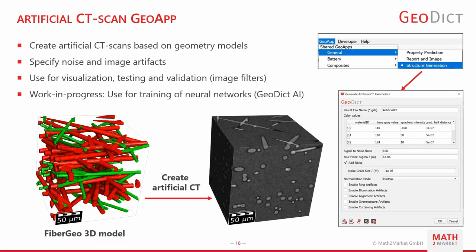Last but not least, we have the artificial CT scan GeoApp written by Andreas Weber. This allows you to create artificial CT scans based on geometry models — you take your normal binarized or digital model generated by GeoDict and use this app to produce a synthetic CT image. This can be used for visualization, testing, and validation of image filters. One interesting work-in-progress application is using this for training neural networks, which would ultimately mean you don't have to segment your images anymore — you can train a neural network to start from a CT image and output fibers directly, without any manual segmentation. That's the goal.